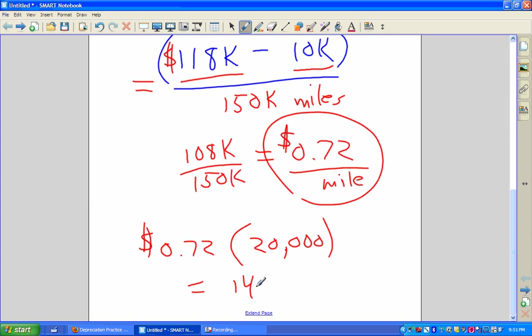And be aware of your units here. This is dollars per mile times a mile, so I get dollars. So here is my depreciation expense for the year 2004. And that's how that works.